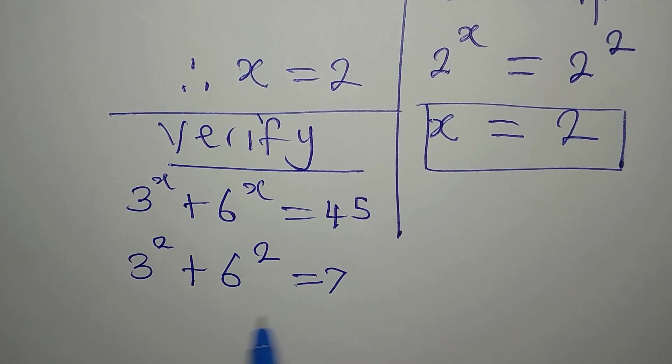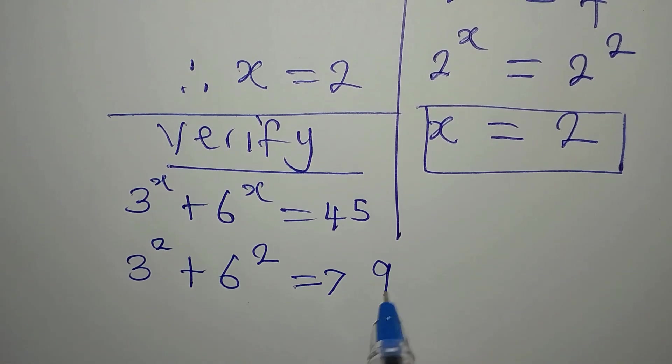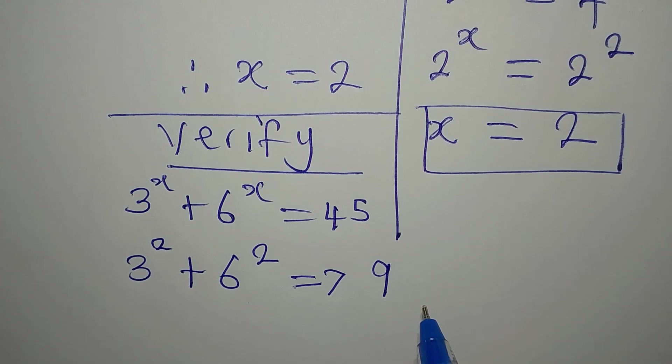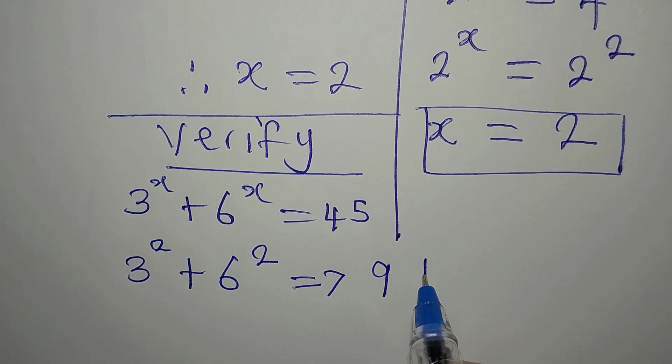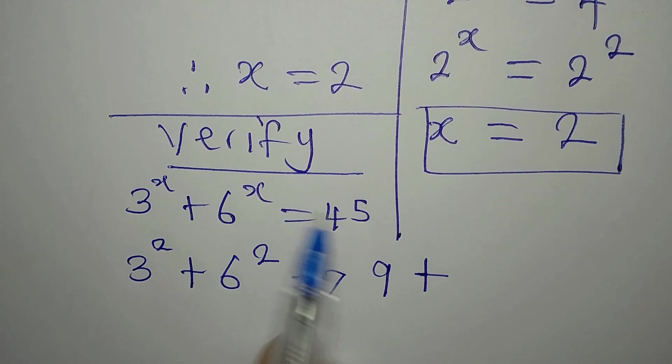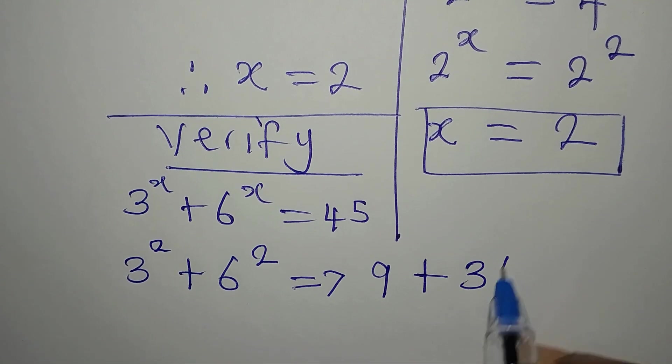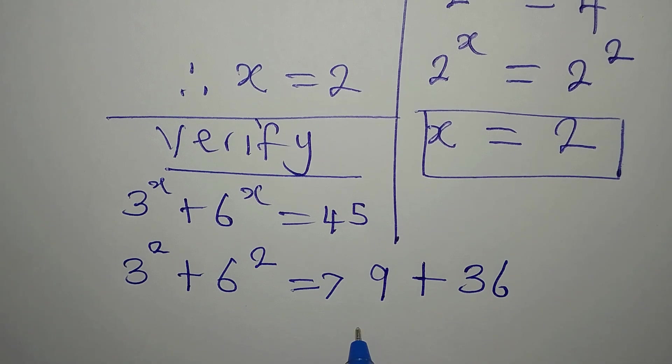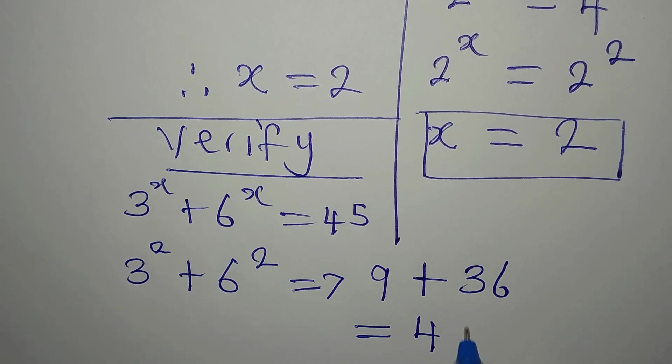And this means we will be having 3 squared is 9, then plus 6 squared. And 6 squared is 36. So if you add these two, you will definitely have 45.